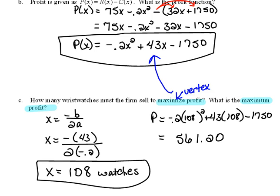we're going to get 561.2. But again, remember, this is an application problem, so money is dollars and cents. Our maximum profit then would be $561.20.